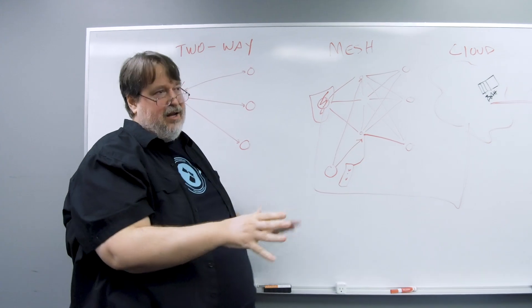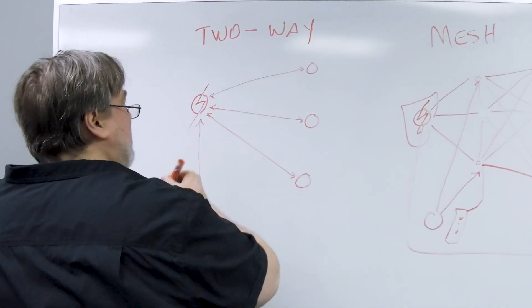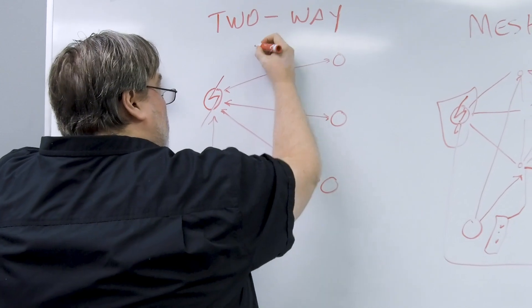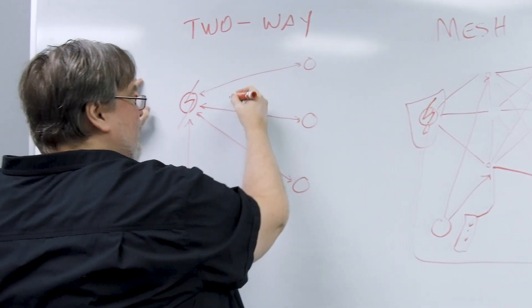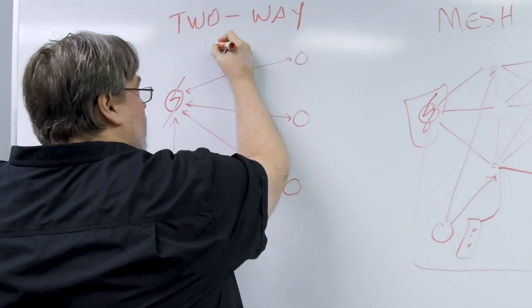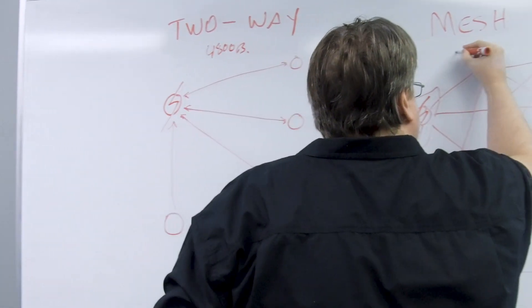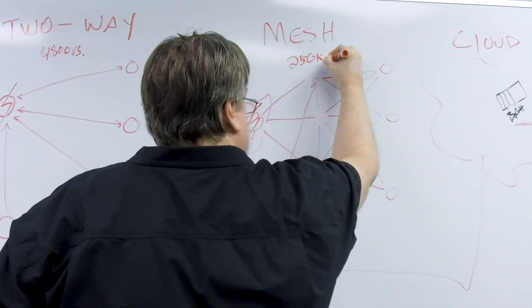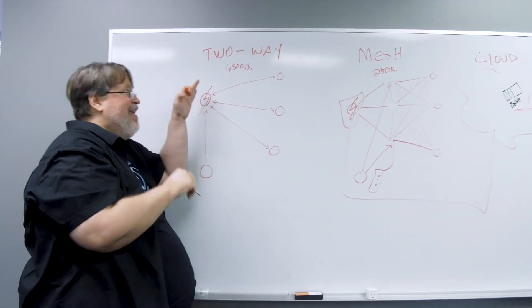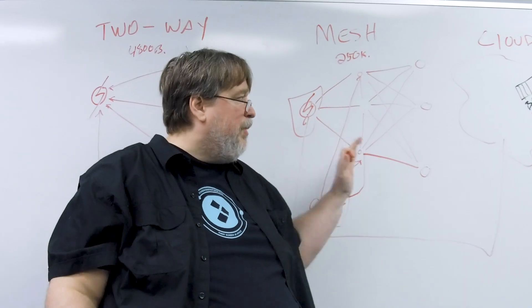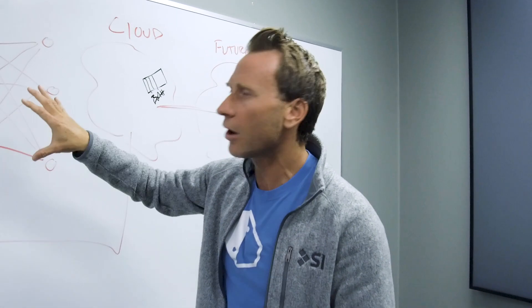And speed—the one thing that we haven't talked about. These systems are, I'll draw a horse and carriage. That's what this system is, because you're really talking about 4,800 baud. Over here we're at 250 kilobits a second. So 250k versus this one.